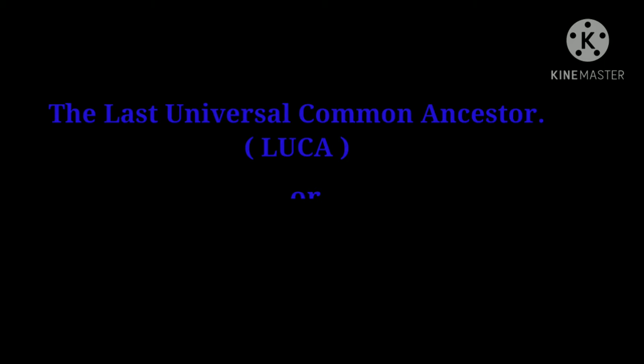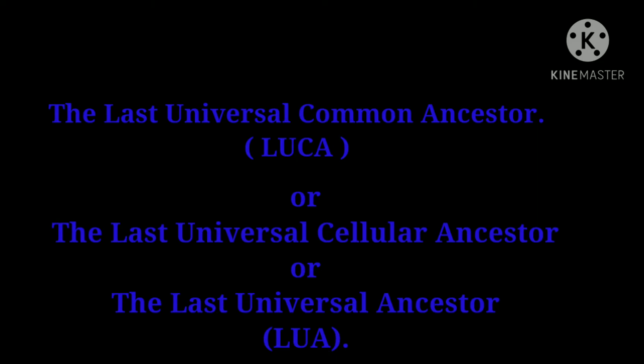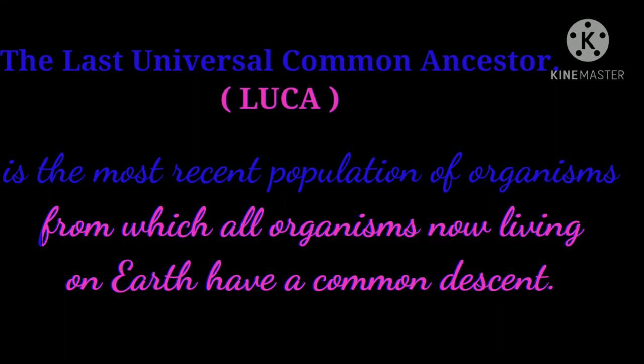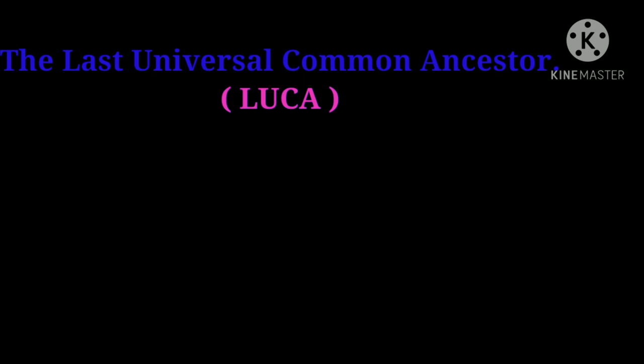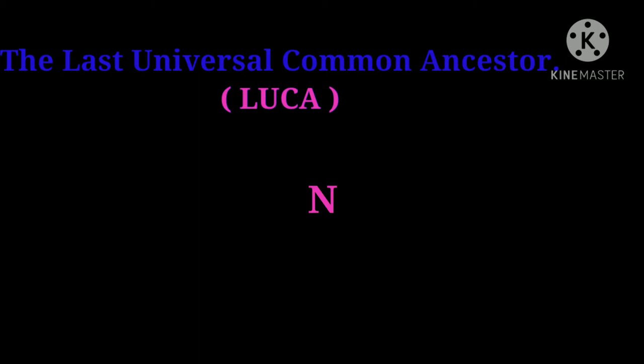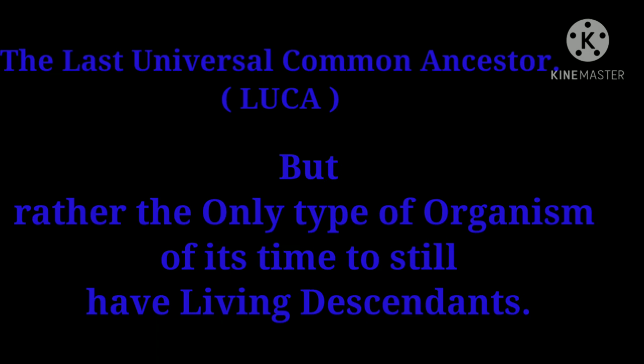The last universal common ancestor, or last universal cellular ancestor, or the last universal ancestor, is the most recent population of organisms from which all organisms now living on Earth have a common descent — that is, the most recent common ancestor of all current life on Earth. The last universal common ancestor is not thought to be the first life on Earth, but rather the only type of organism of its time to still have living descendants.